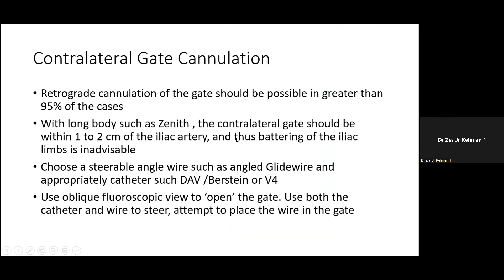Contralateral cannulation is done from the opposite side, typically using a steerable angled wire with an angled catheter. In 95% of cases it is achievable, though it takes time and technique. The best approach is to use an oblique fluoroscopic view to open the gate, use both catheter and wire to steer, and attempt to place the wire into the gate. It is very important to confirm wire placement before advancing any extension.